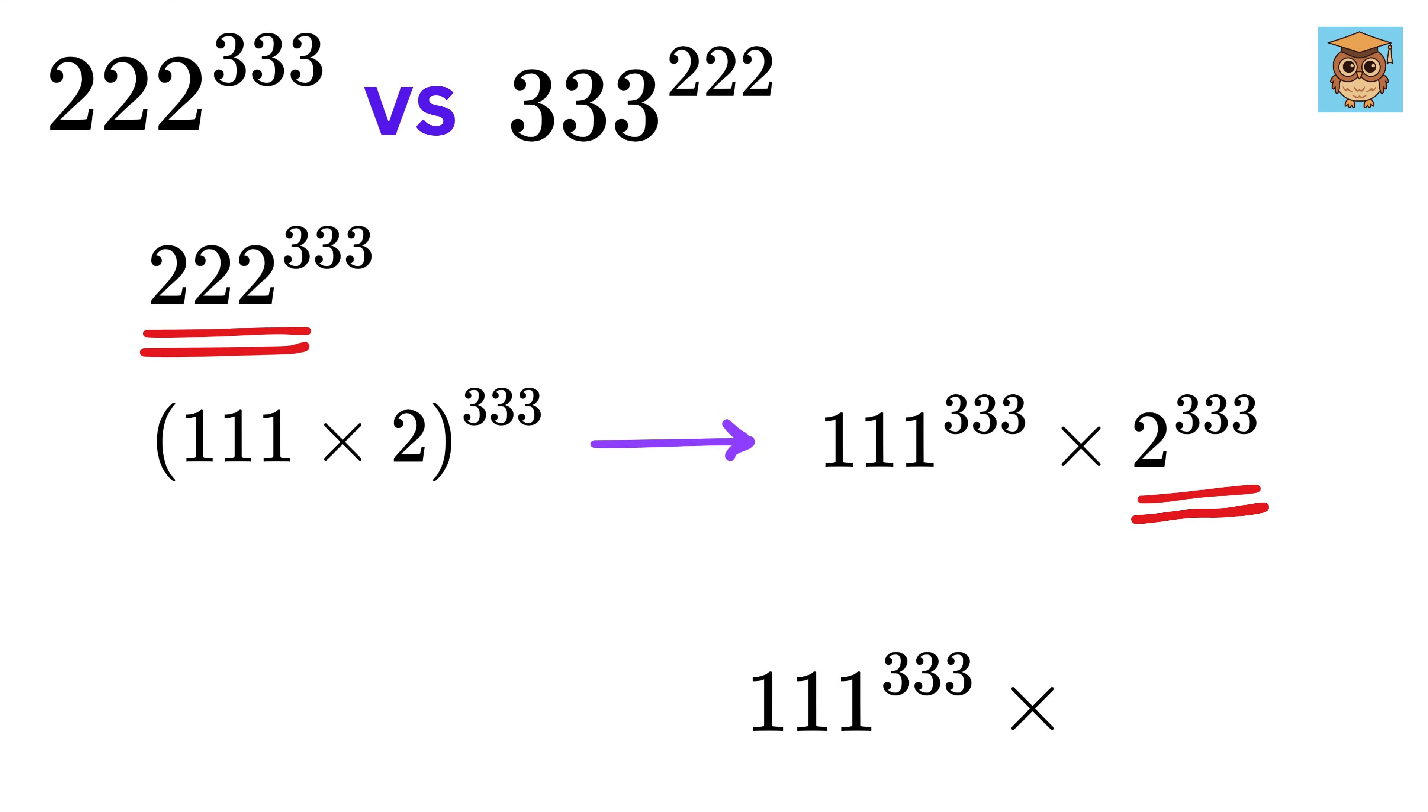Next, we can rewrite this as 2 raised to 111 times 3, because 111 times 3 is 333. Next, we can use this power rule to make it 2 raised to 3 whole raised to 111.